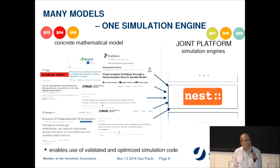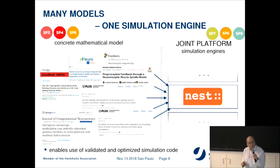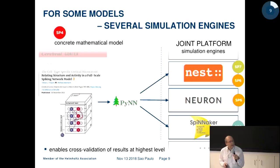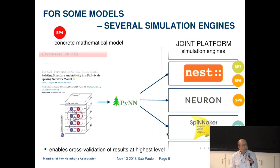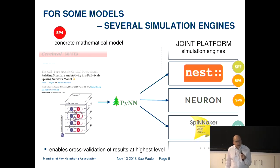In recent months we discovered that there is often some confusion in the community on what simulation engines like NEST are good for. There are several general purpose simulation engines like NEST and Neuron, and we can simulate many different models with one simulation engine. This is very good because it means we can validate and optimize the code for the target computer system. Also, some models can be implemented on several simulation engines — for example, this network model can be implemented in NEST, but also in Neuron and on neuromorphic hardware, allowing cross-validation at the highest level.